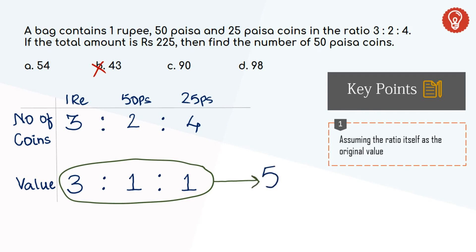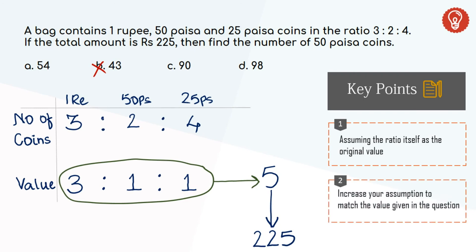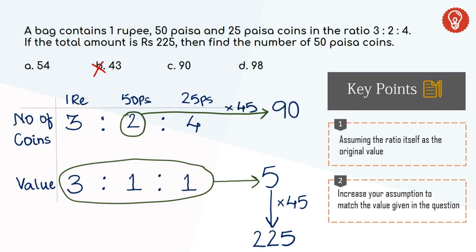But the original value of the bag is 225 rupees. So I have to increase my assumption by 45 to match the value given in the question. We assumed there are 2 fifty-paise coins, so increase that by the same factor of 45, which gives 90. There are 90 fifty-paise coins in the bag. Option C is the right answer.